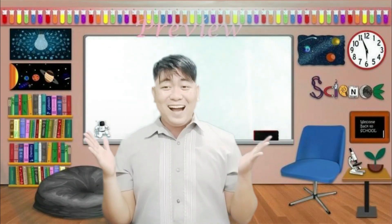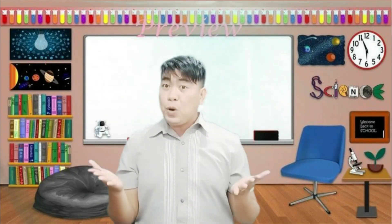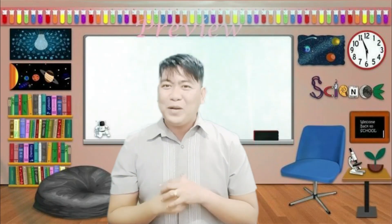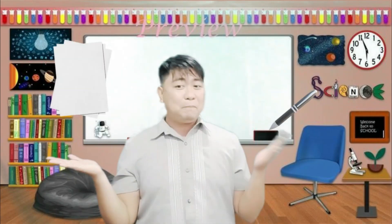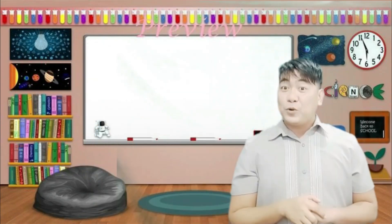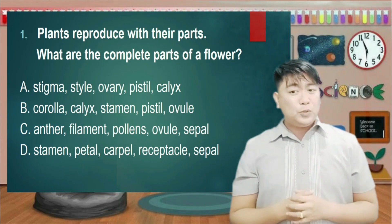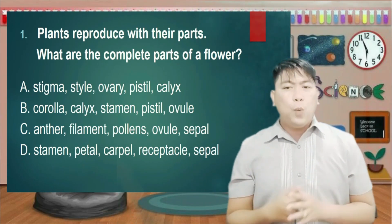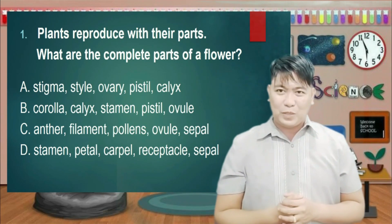It's wrap-up time! Learners, let us test if you have understood very well our lesson. Get your paper and pen! Let's go! Grade 5. Plants reproduce with their parts. What are the complete parts of a flower?